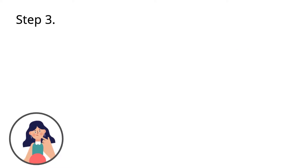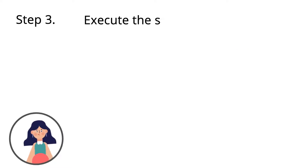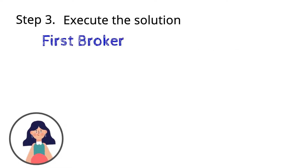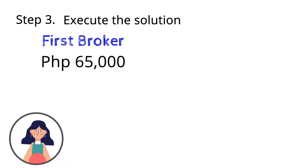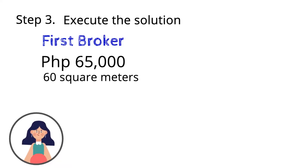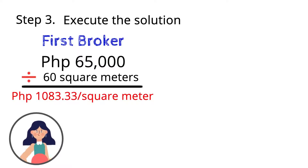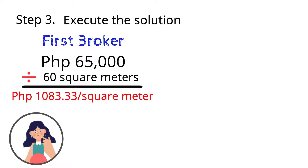Step number three: execute the solution. The first broker is selling his lot for 65,000 pesos over 60 square meters. Dividing them, the cost of the lot is 1,083.33 pesos per square meter.